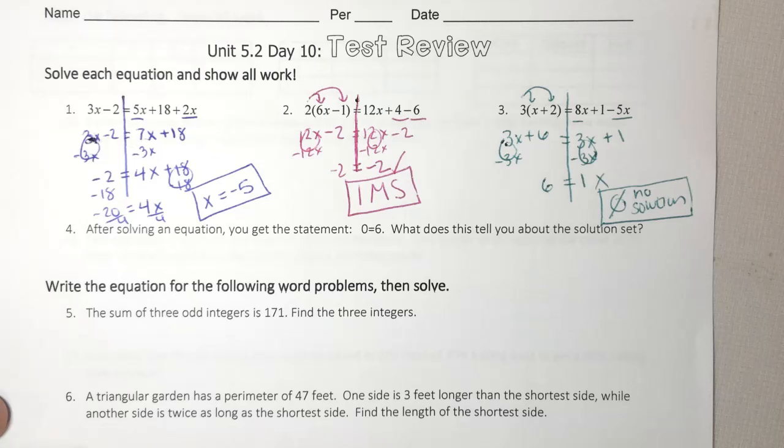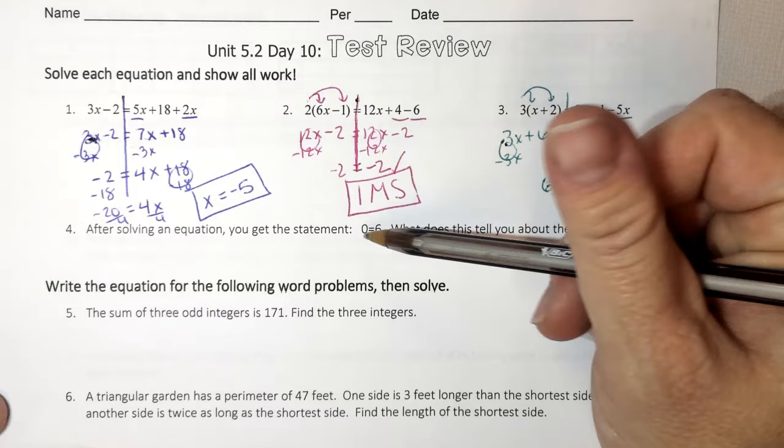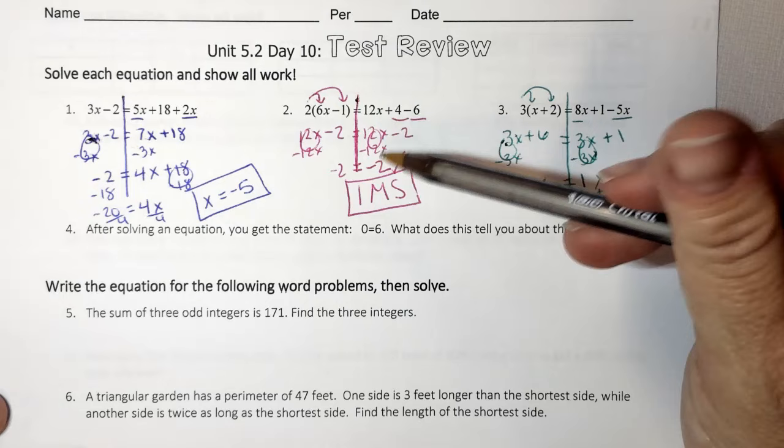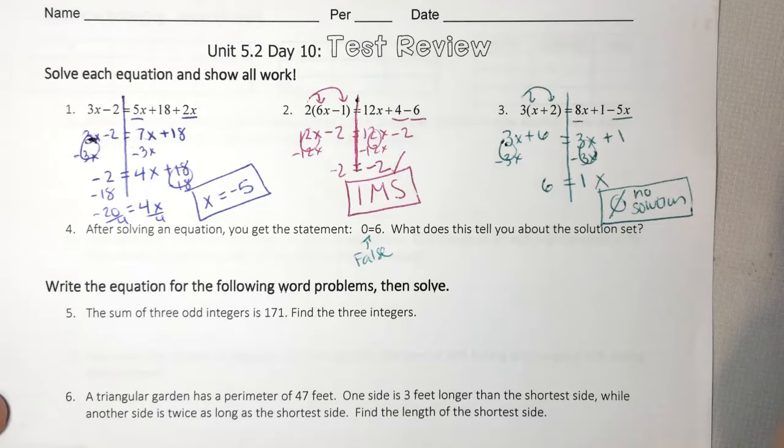After solving an equation, you get this statement 0 equals 6. So after we solve, we get 0 equals 6. So there's no variables. So I know it's a special case, which is false. So this tells you that there's no solution.